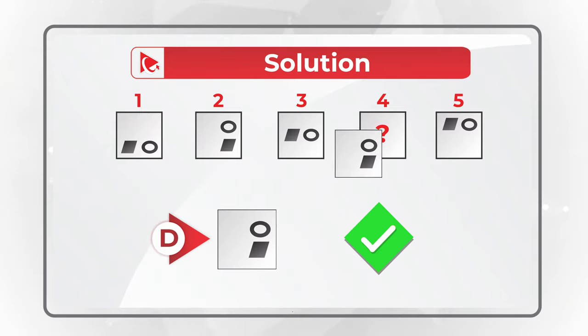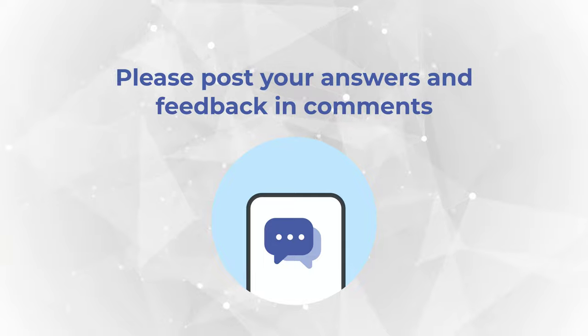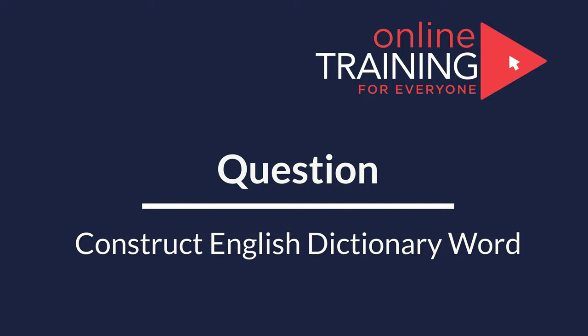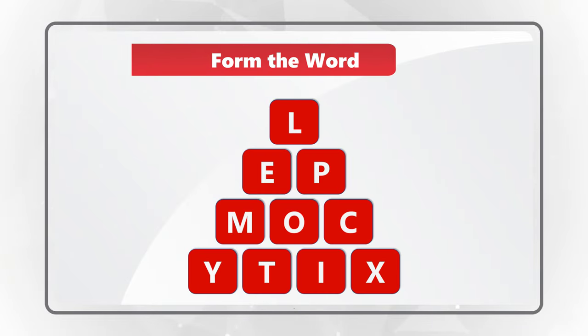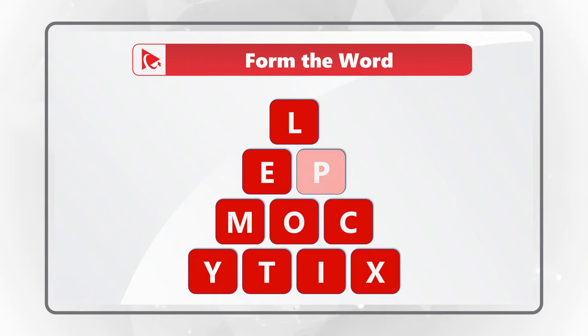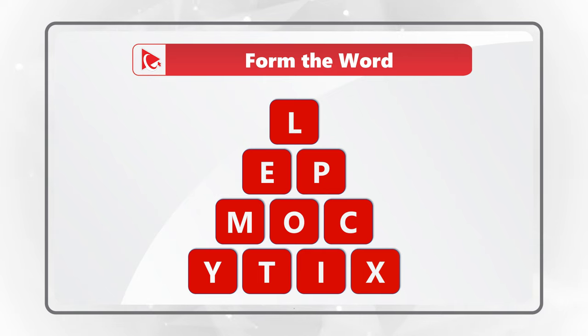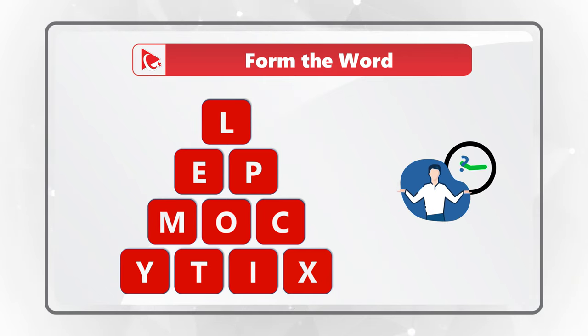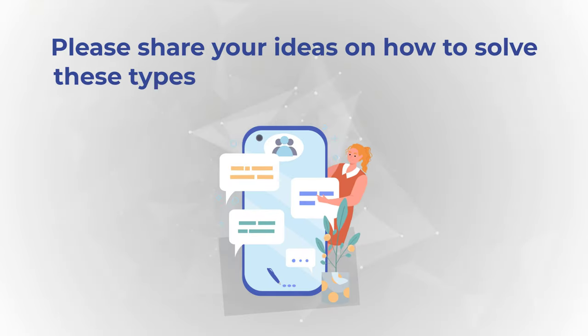Hopefully you've nailed this question and now know how to answer similar problems on the test. In case you need more problems with solutions, please make sure to check out the description of this video. Here's a question for you to practice. You're presented with 10 letters, and you need to form a word from the English dictionary using all the letters only once. The letters are L-E-P-M-O-C-Y-T-I-X. The word somehow represents the fact that there are 10 letters. Please post your answer in comments so I can give you my feedback. Thanks for participating and good luck!